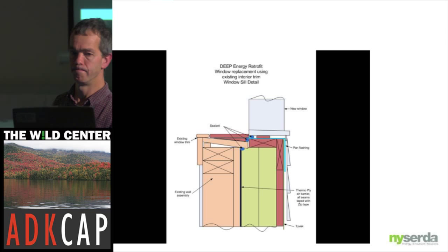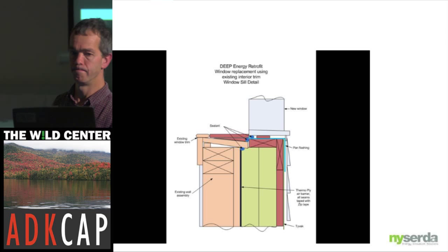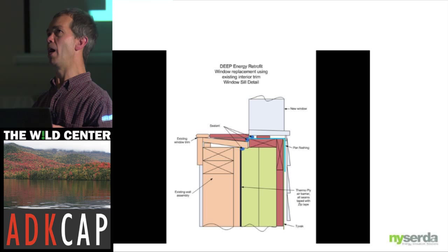If the window came out we replaced it, but for two of the houses where the window didn't come out, we still did the window buck and flashed it — we just put a storm window there. So the real window was still doing the work behind.